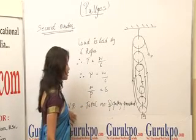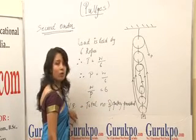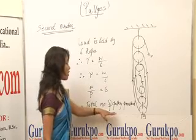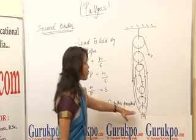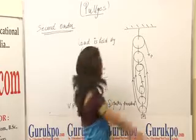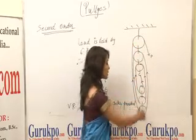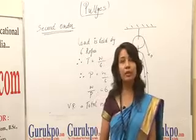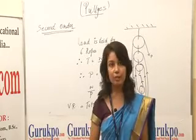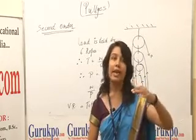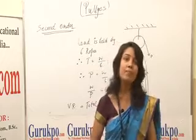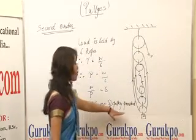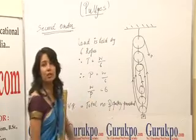Therefore, the velocity ratio signifies the total number of pulleys provided. There are 1, 2, 3, 4, 5, 6 pulleys in total. The weight is held by the three movable pulleys, and three pulleys are considered fixed because they are attached to the ceiling. Thus, the velocity ratio is equal to the total number of pulleys provided.